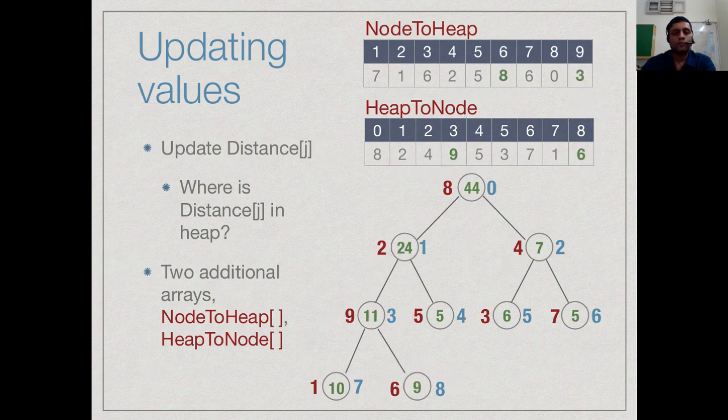By keeping these two extra arrays, I can do these updates very easily because I have a way of going backwards and forwards between the heap index and the node index.